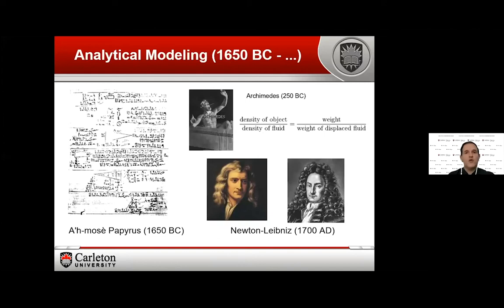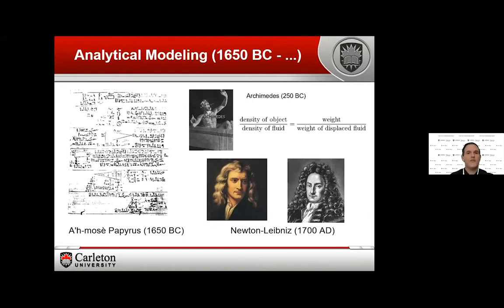The good thing about analytical modeling is that we have a lot of experience with it. Here you can see a copy of the Rhind Papyrus from 1650 BC — there's an equation with an x value, the first documented real equation in history. Analytical modeling was formalized to study nature by Newton and Leibniz around 1700. So we have good mathematical tools that have been used for centuries.